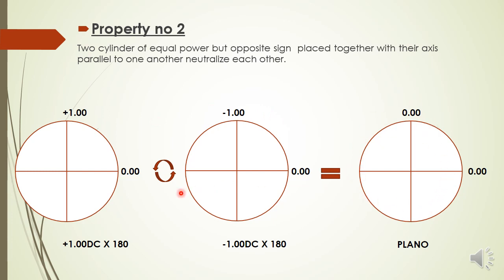The result is a plano lens, which basically neutralizes each other. This property is very helpful when performing neutralization — whenever you want to find the power of a cylindrical lens, you take the opposite sign of that power, keep its axis parallel to the original, and keep increasing until it gets neutralized. Whatever the power of that particular cylinder, you take a same power with opposite sign and keep it parallel to that axis.